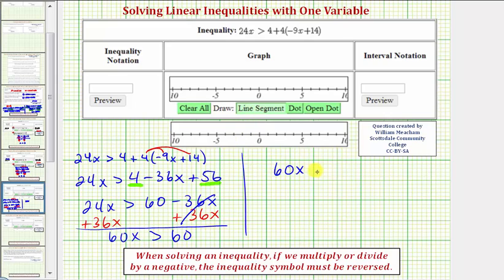So if we have 60x is greater than 60, our last step to solve for x would be to divide both sides by 60. Notice here we're dividing by a positive so we do not reverse the inequality symbol.